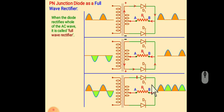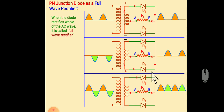But this direct current is a fluctuating direct current, that means it has some AC component. So to convert this fluctuating DC into a constant DC, we need a filter circuit. By connecting a filter circuit, we can convert this pulsating DC into constant DC.